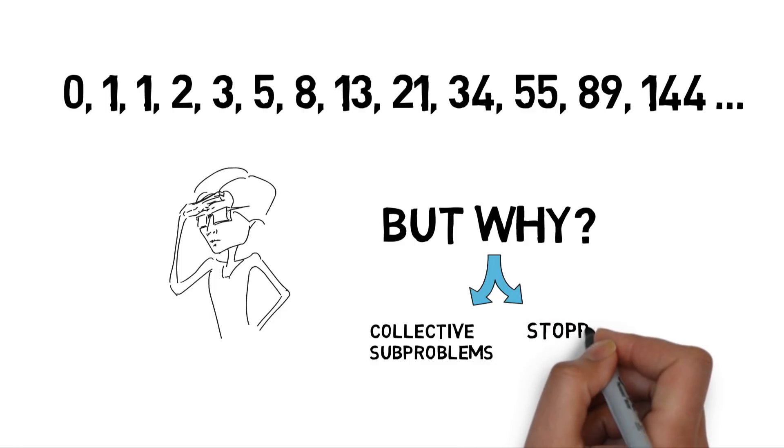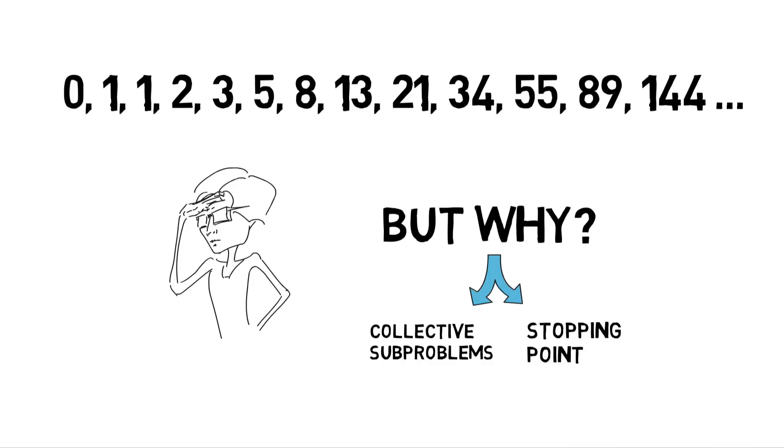Second, we have a stopping point. The Fibonacci of 0 is 0, the Fibonacci of 1 is 1. So to calculate number n in a Fibonacci, we can basically keep summing up the previous two Fibonacci numbers till we reach our stopping point, which is index number 0 or index number 1, and for those, we already have a solution.